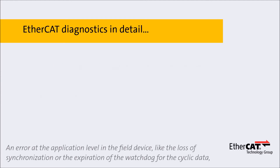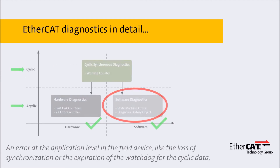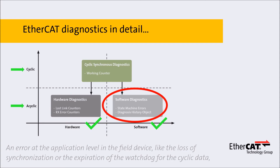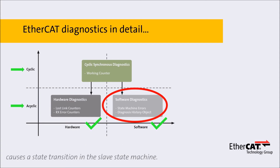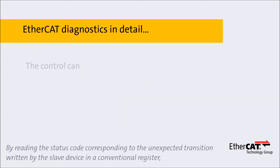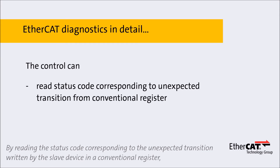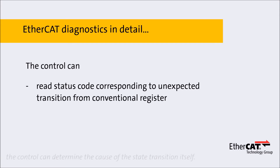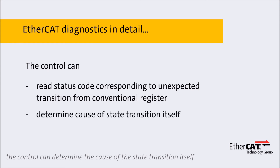An error at the application level in the field device, like the loss of synchronization or the expiration of the watchdog for the cyclic data, causes a state transition in the slave state machine. By reading the status code corresponding to the unexpected transition written by the slave device in a conventional register, the control can determine the cause of the state transition itself.